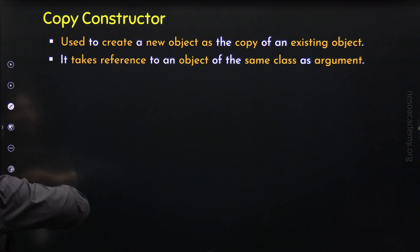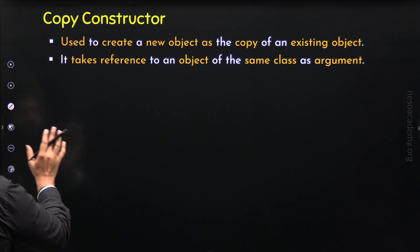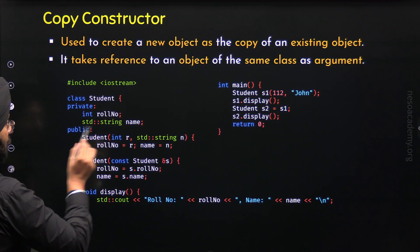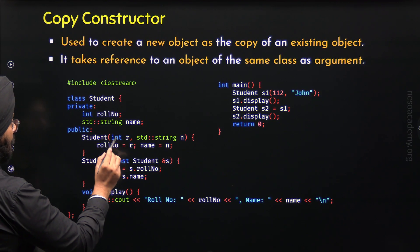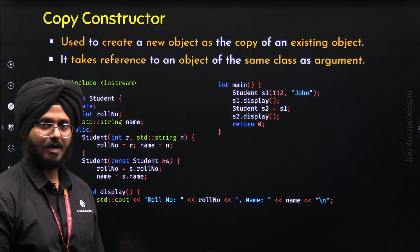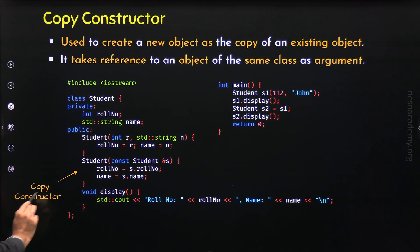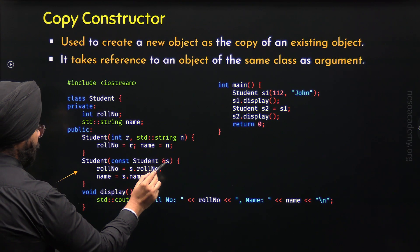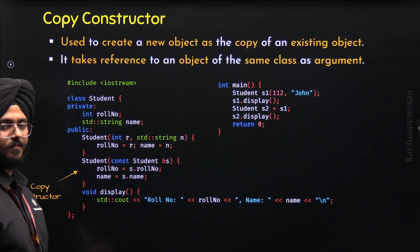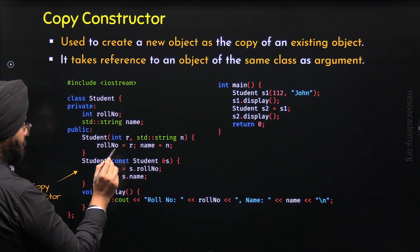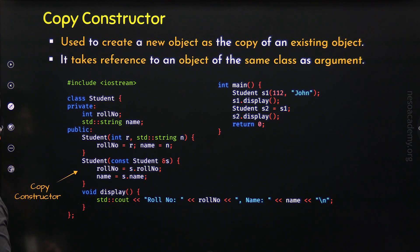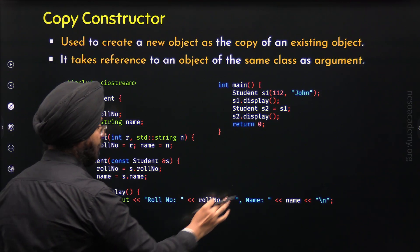To make this more clear and to understand how we can create our own copy constructor, let's see one example program. Here we have the class Student with private members: role number and name. Apart from this, we also have public member functions. We have a parameterized constructor with two parameters R and N, through which we can provide values to role number and name of a specific object. Here we have the copy constructor. You can observe that we have a reference to some object of class Student, and this is constant because it will not change — this is the convention we follow. We have the statements: role number equals s dot role number, and name equals s dot name. Then we have a display function that allows us to display role number and name on the screen.